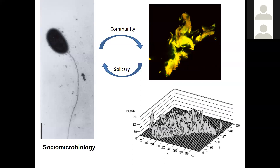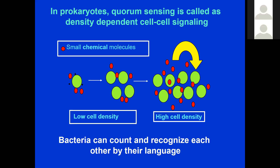As the field grew, the field of sociomicrobiology started — the study of bacteria in a community. Bacteria were no longer considered solitary organisms. There is a transition which happens from a solitary to a community life form, and vice versa, as a reversible process. This is an example from our lab: this is a picture taken with a very powerful microscope in which you can see mountain-like structures — these are nothing but houses made up by millions of bacteria.